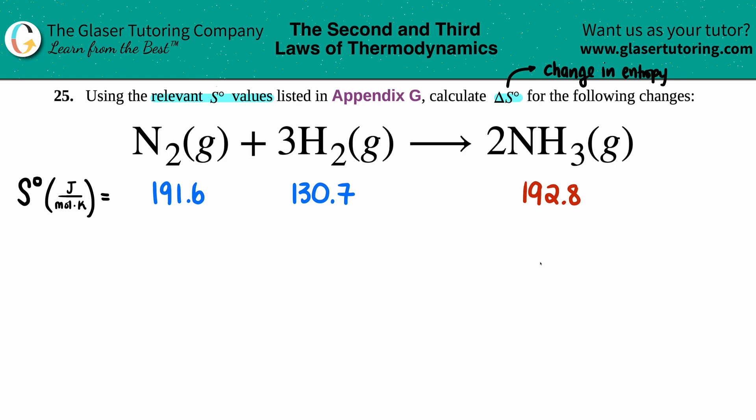Now in this case we can kind of guesstimate if our delta S value is going to be positive or negative. Keep in mind that all these are gases, right? So you're going from—basically if we count up how many total moles we have—we had one mole of N2, so we had one mole of gas here plus three moles of gas. The left side is four moles of gas and we're only going to two moles of gas.